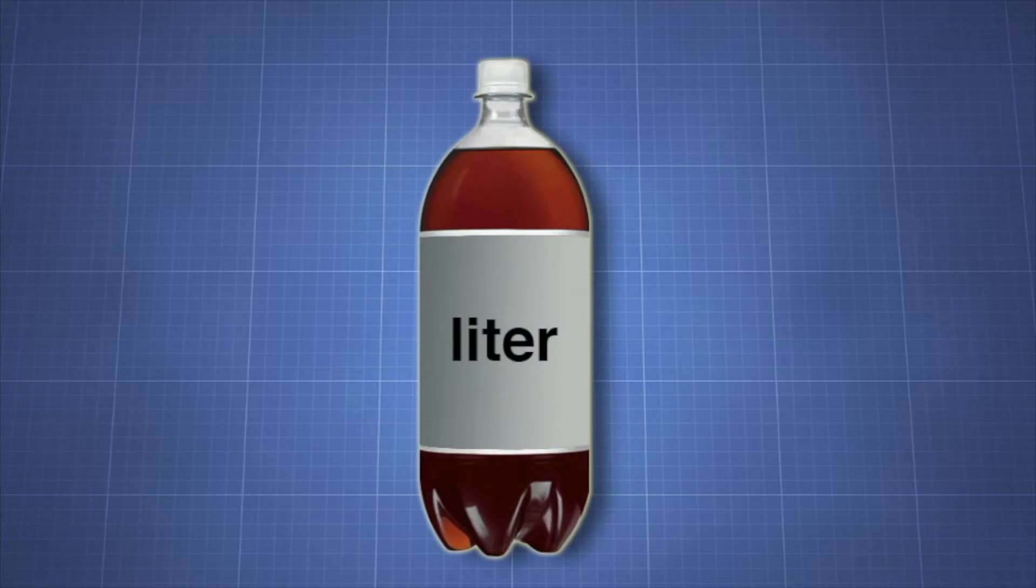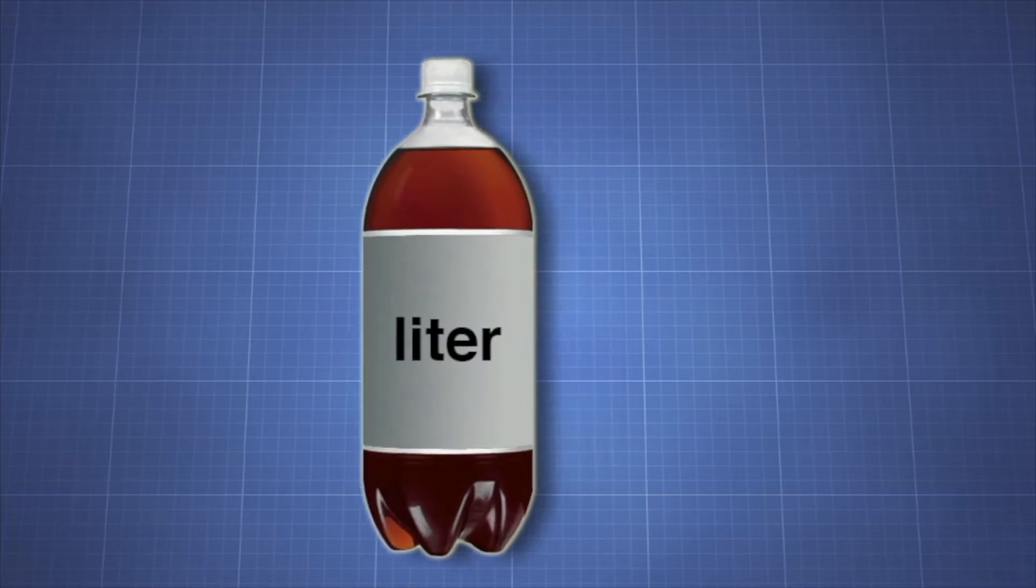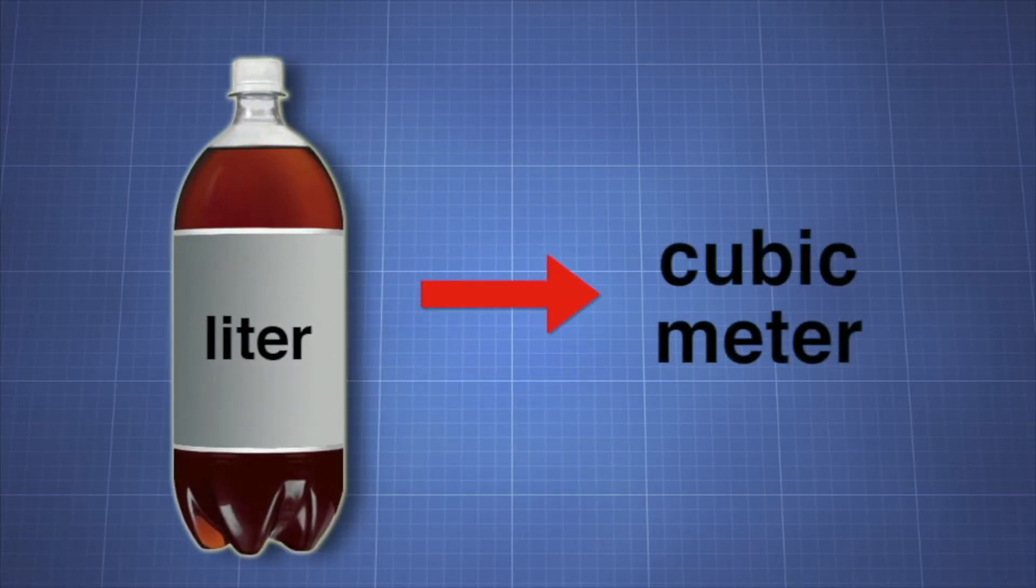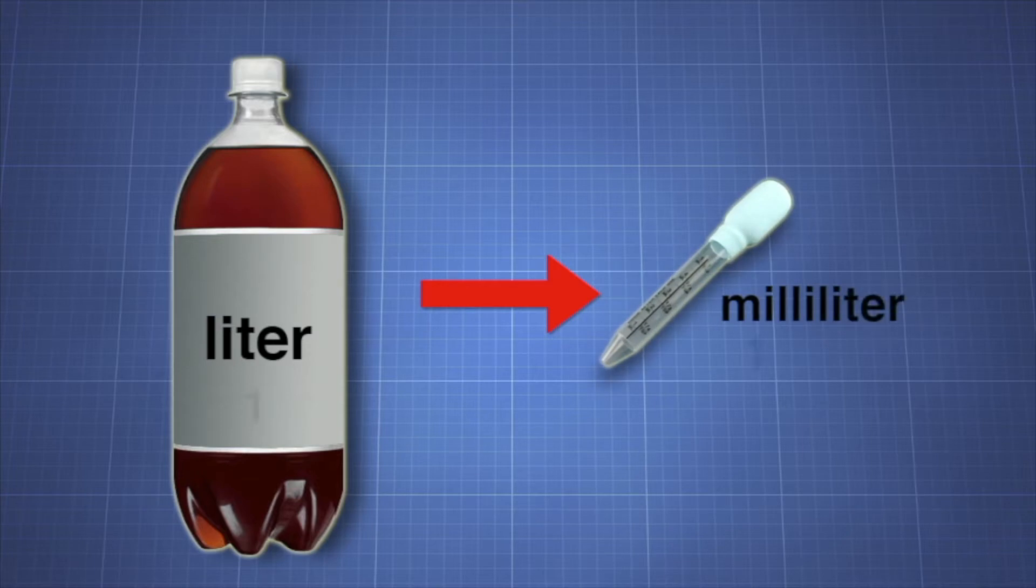The liter, the SI unit of volume, is a derived unit. The liter is derived from the cubic meter. The liter equals 1,000th of a cubic meter. The milliliter is derived from the liter. 1,000 milliliters equal a liter.